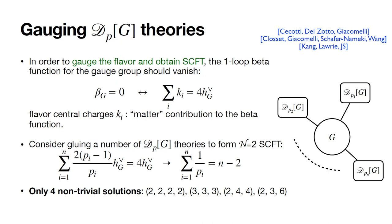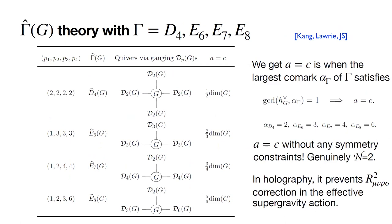This theory has been studied by many people before us. Our contribution was noticing that this theory has A equals C for finite N for every choice of G — something that previous authors who computed the central charges had missed. That looks a little bit bizarre from the holographic perspective: in holography, the difference between A and C appears as a coefficient of the Riemann-squared term in the supergravity effective action. From the effective field theory point of view, there's no good reason for it to vanish. But if you construct the holographic dual of this theory, that should have a vanishing Riemann-squared term.